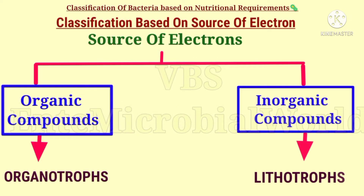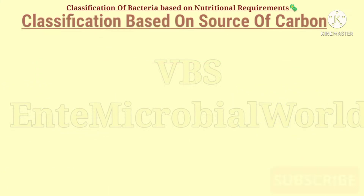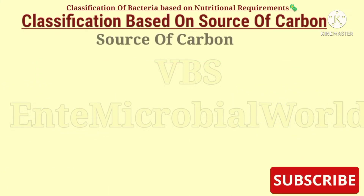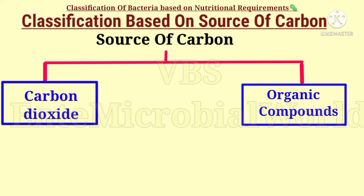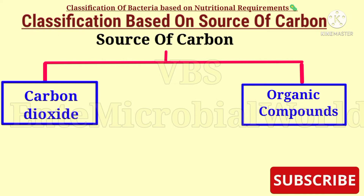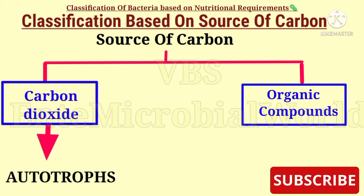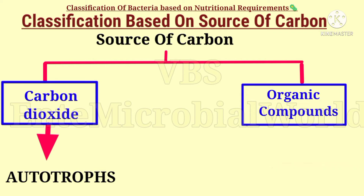Classification of bacteria based on source of carbon: carbon dioxide and organic compounds are the sources of carbon. Bacteria which can use carbon dioxide as their major source of carbon are called autotrophs. Bacteria which can use organic compounds as their carbon source are called heterotrophs.